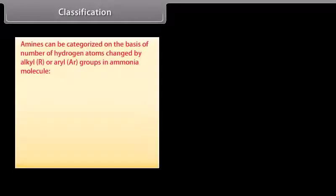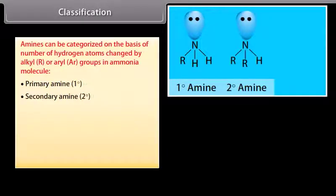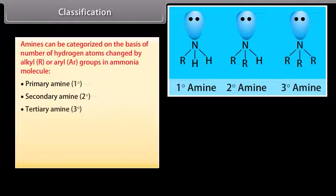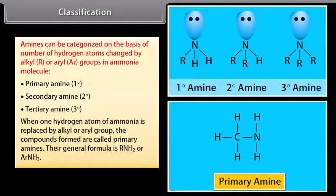Amines can be categorized on the basis of the number of hydrogen atoms replaced by alkyl or aryl groups in the ammonia molecule: primary amine (1°), secondary amine (2°), and tertiary amine (3°). When one hydrogen atom of ammonia is replaced by an alkyl or aryl group, the compounds formed are called primary amines. Their general formula is R-NH2 or Ar-NH2.